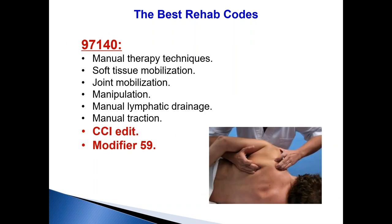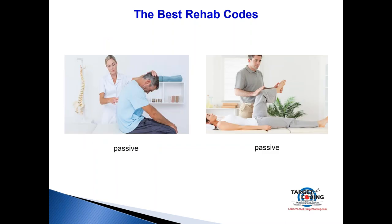Code 97140 is manual therapy techniques, which includes one or more of the following: soft tissue mobilization, myofascial release, manual lymphatic drainage, joint mobilization, and manual traction. This is a passive service — the patient is just lying or sitting there doing nothing. That distinguishes it from 97110 and 97112, which are active procedures where the patient must be doing the work. For 97140, the patient is passive.